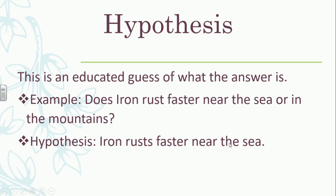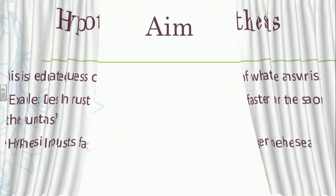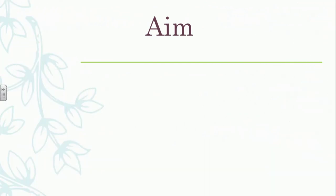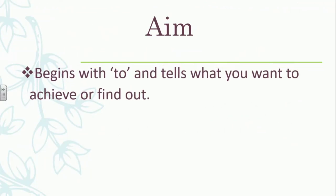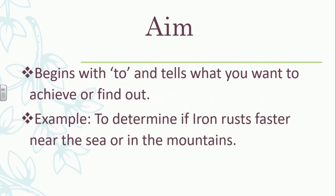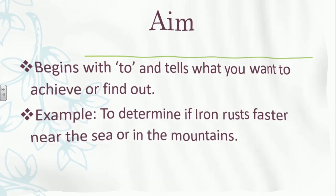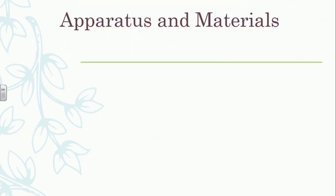Our next thing is the aim. Your aim begins with 'to' and tells what you want to achieve or find out. Looking at our example: 'to determine if iron rusts faster near the sea or in the mountains.' What you're really trying to find out is clearly stated there — you are trying to determine where the iron rusts faster.